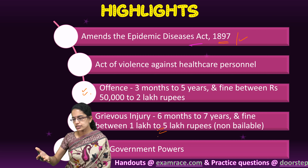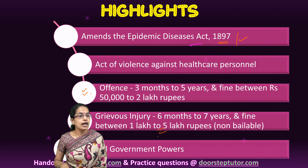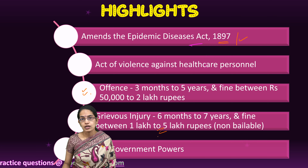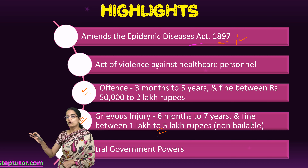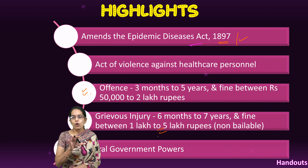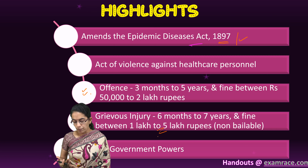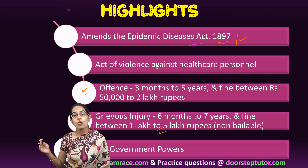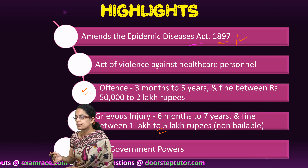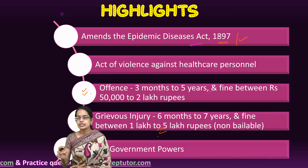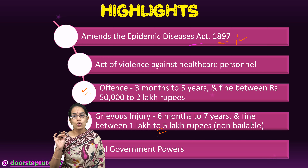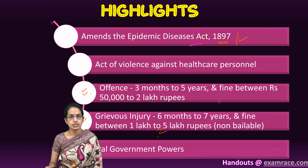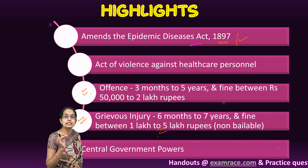The person who is convicted under the Epidemic Disease Act would have the liability to pay compensation to the healthcare personnel whomsoever gets injured or hurt by them. Properties covered include clinical establishments, quarantine facilities, mobile medical units, and any other property in which a healthcare personnel has direct interest. So if there is injury to healthcare personnel or any harm to the infrastructure, both would be seriously dealt with.